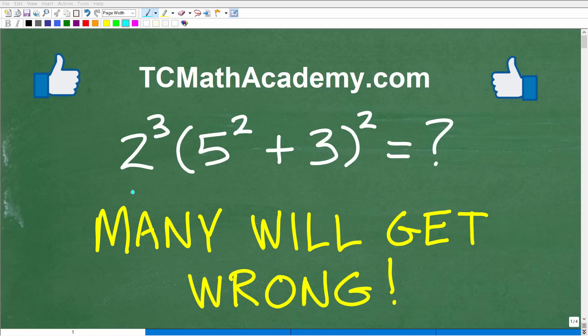Okay, so do you have the math skills to figure this problem out? Well, hopefully you do. And if you're not quite sure, I'm going to fully explain exactly how to do this problem. But let's take a look at the actual problem here. We have 2 to the third power times parentheses 5 squared plus 3 and parentheses squared. What is this all equal to?